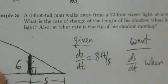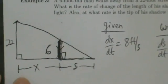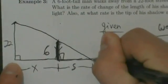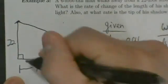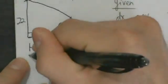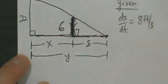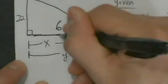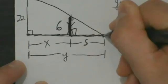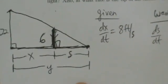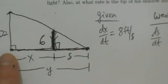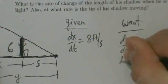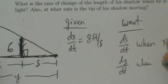Second, at what rate is the tip of the shadow moving? The tip of the shadow is on the ground, and we measure from the base of the light. That whole distance — x plus s — we'll call y. So the rate the tip is moving is dy/dt, and we also want that when x equals 19 feet.